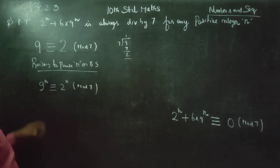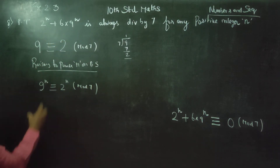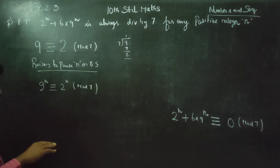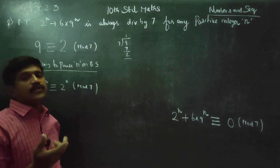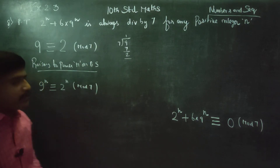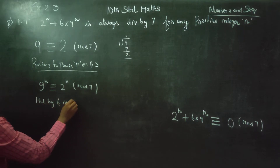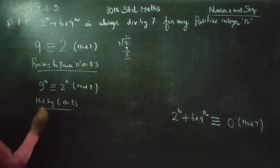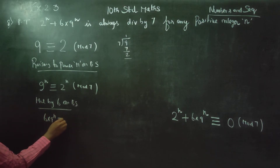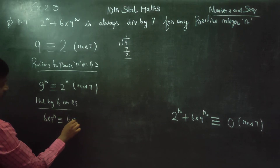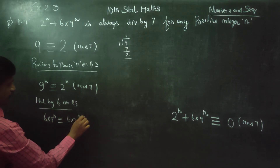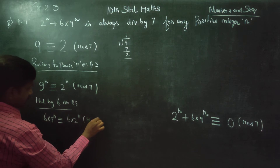Then I am going to multiply by 6 on both sides. So 6 into 9 power n is congruent to 6 into 2 power n mod 7.